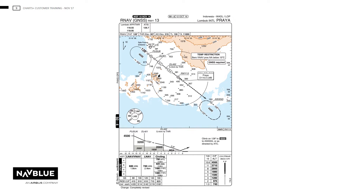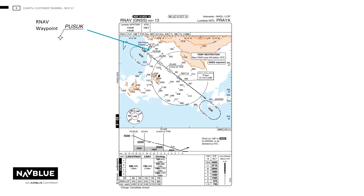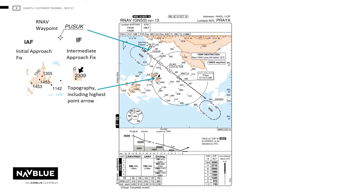Here is an RNAV chart with topography on it. Please familiarise yourself with the depiction of the aeronautical information. Here is an RNAV waypoint, written in italic form without the coordinates. The IF and FAF — NAVBLUE will only show the IFs on RNAV charts. Here we can see an example of how NAVBLUE show the topography, including the highest point arrow, which is shown here as a black arrow. The minimum sector altitude is preferably shown in the right bottom corner of the plan view.